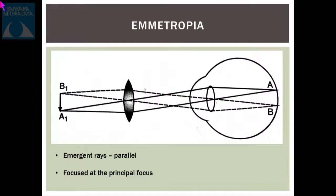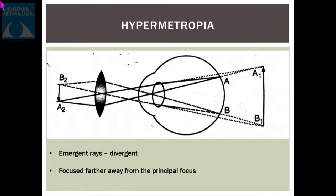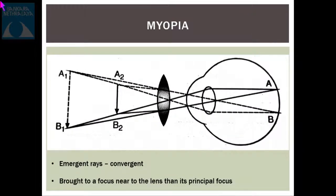In an emmetrope, the emergent rays are parallel and hence they are brought to a focus at the principal focus of the lens itself. In a hypermetrope, the emergent rays from the patient's eye are divergent, so they are focused farther away from the principal focus of the convex lens. In a myope, the emerging rays are convergent, so they are brought to a focus nearer to the lens than its principal focus.